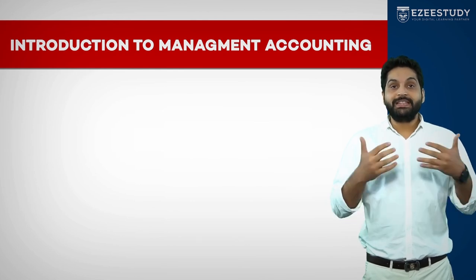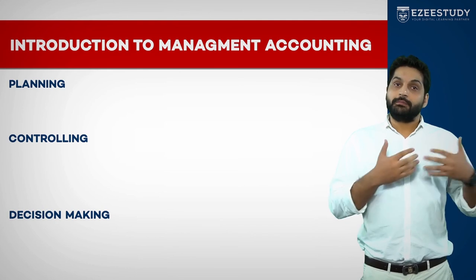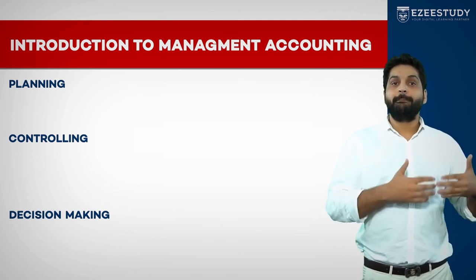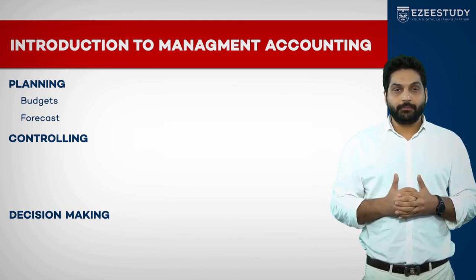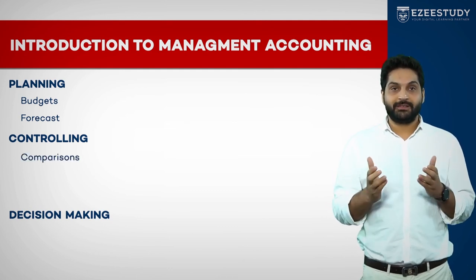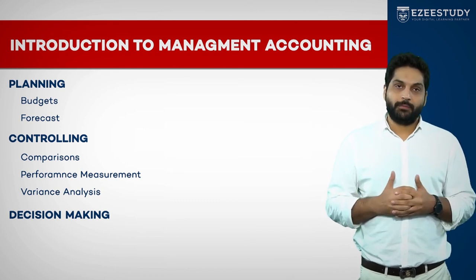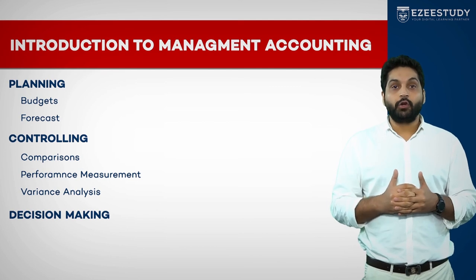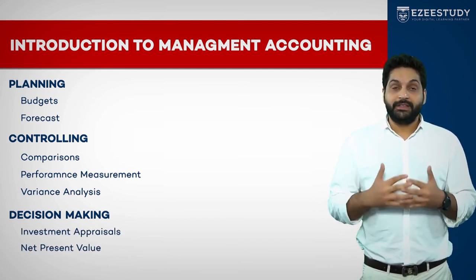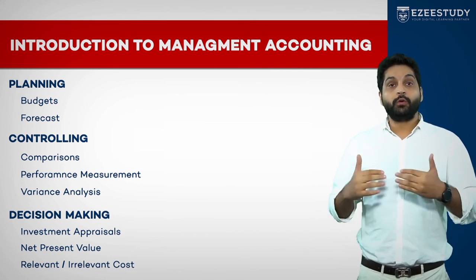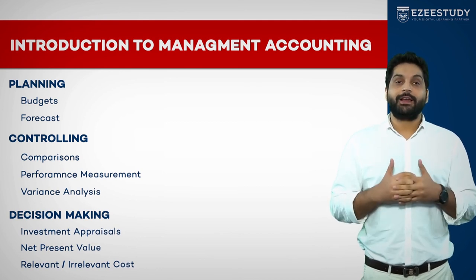At any level of management, information is needed for three key tasks: planning, controlling, and decision-making. For planning, we produce budgets and forecasts for the coming year. For controlling, we provide comparisons, performance measures, and variance analysis so that management can ensure the plan is being followed. For decision-making, we provide information to support both long-term and short-term decisions, such as investment appraisal using net present value.